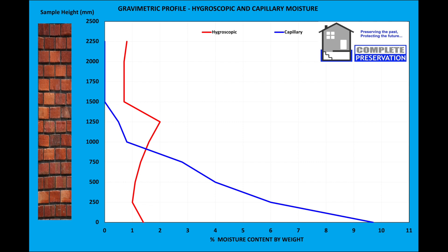Now for some science — BRE digest 245. What we've got here is a moisture profile. The blue line is the capillary moisture, and it shows the sample at the base of the wall: 10% of its weight was actually water, which is absolutely ridiculous but not surprising given what's been going on.